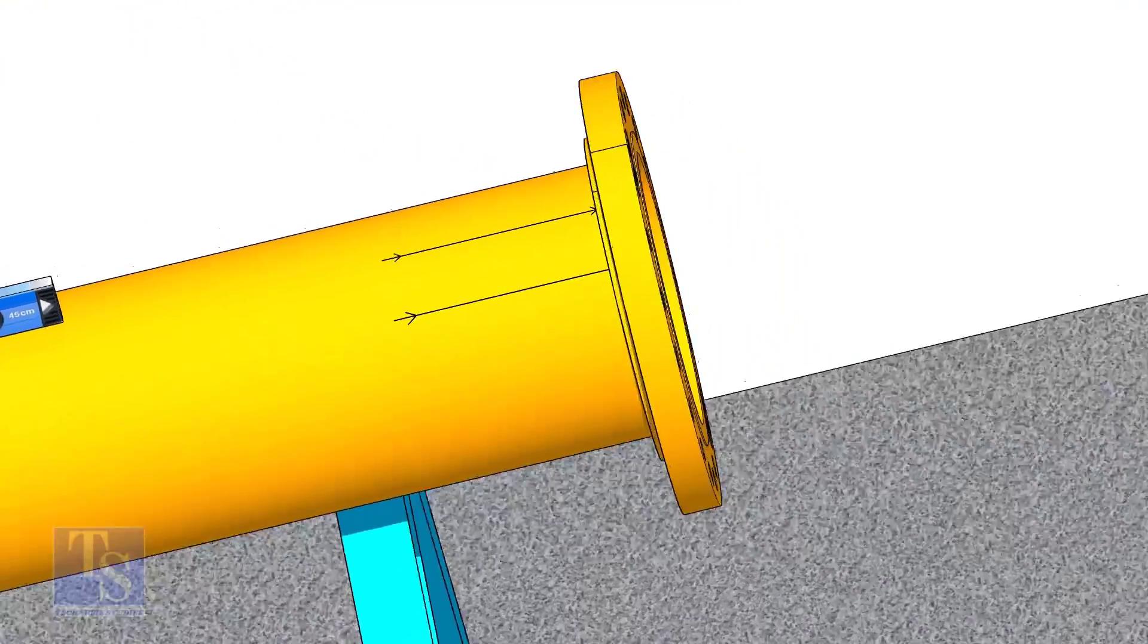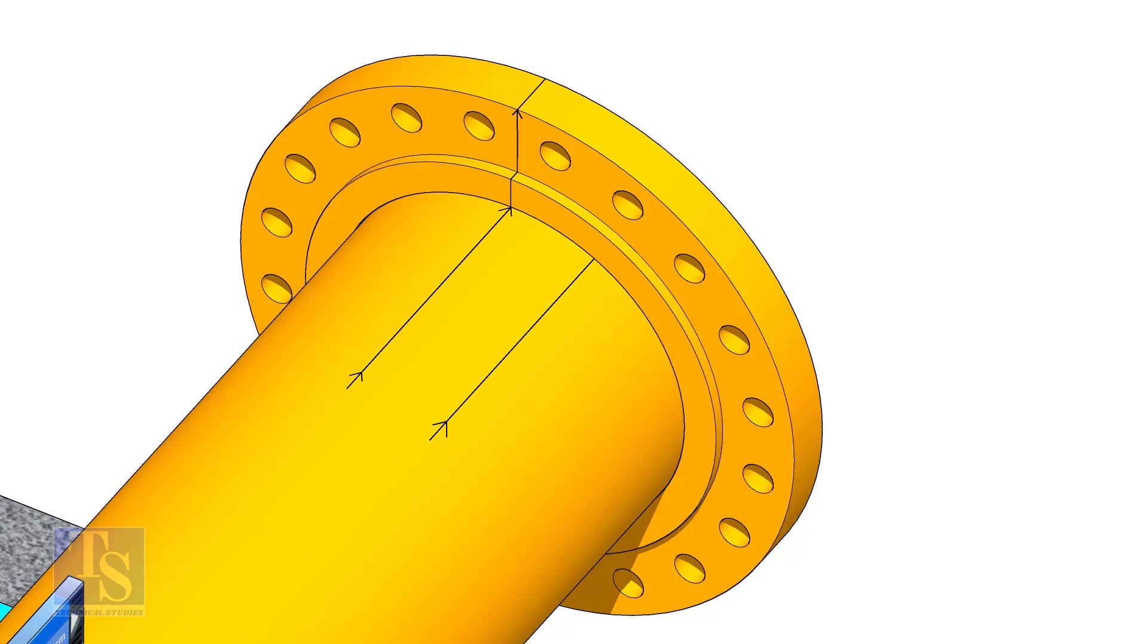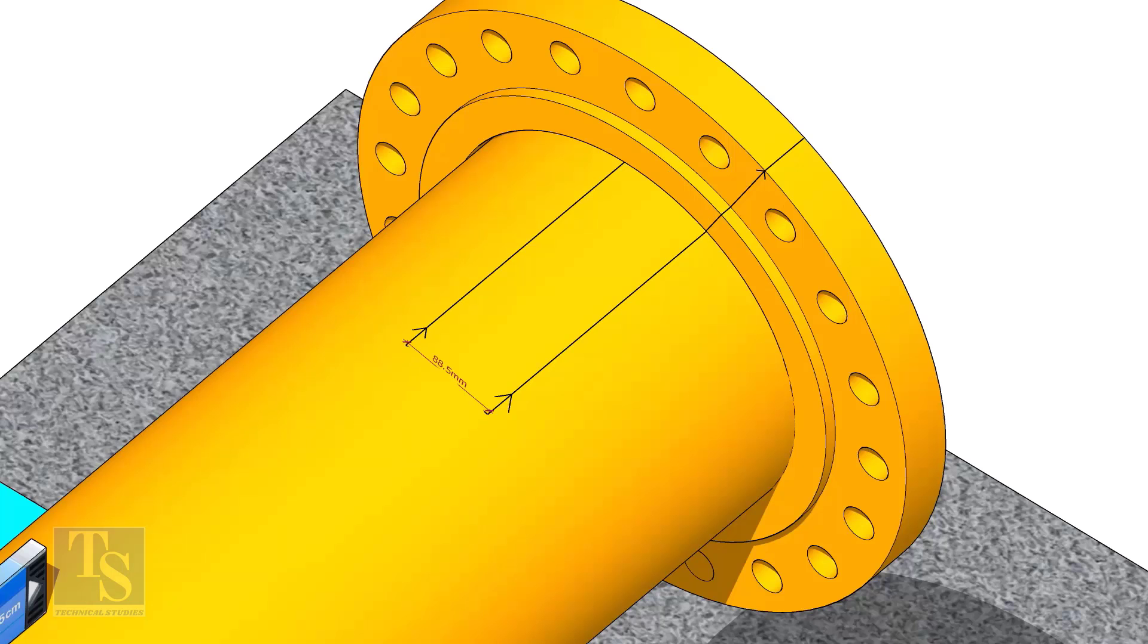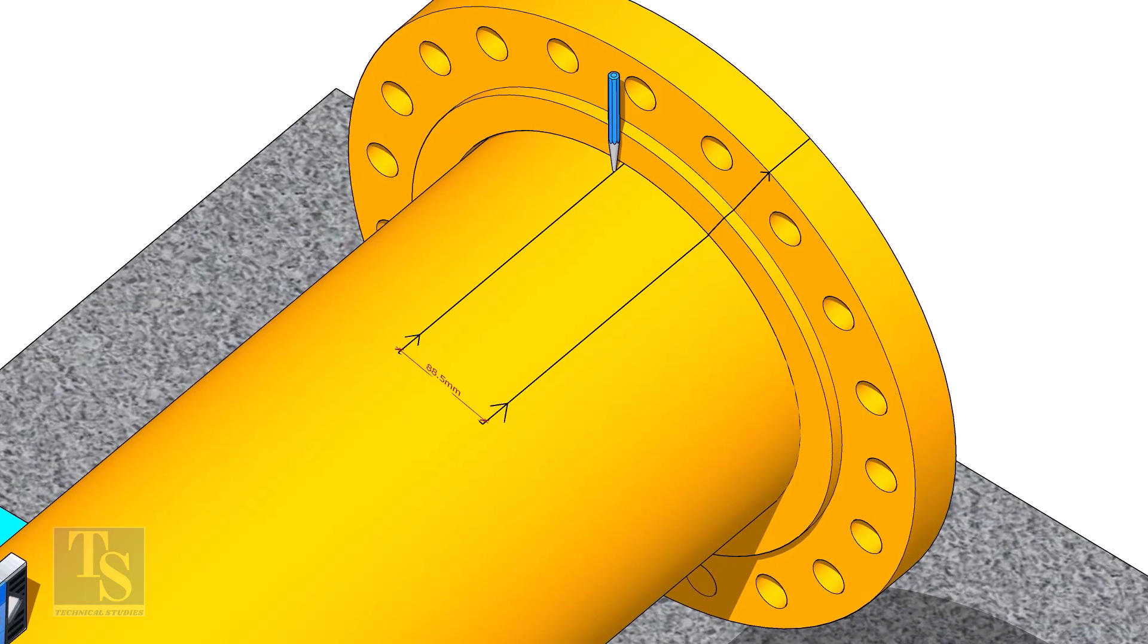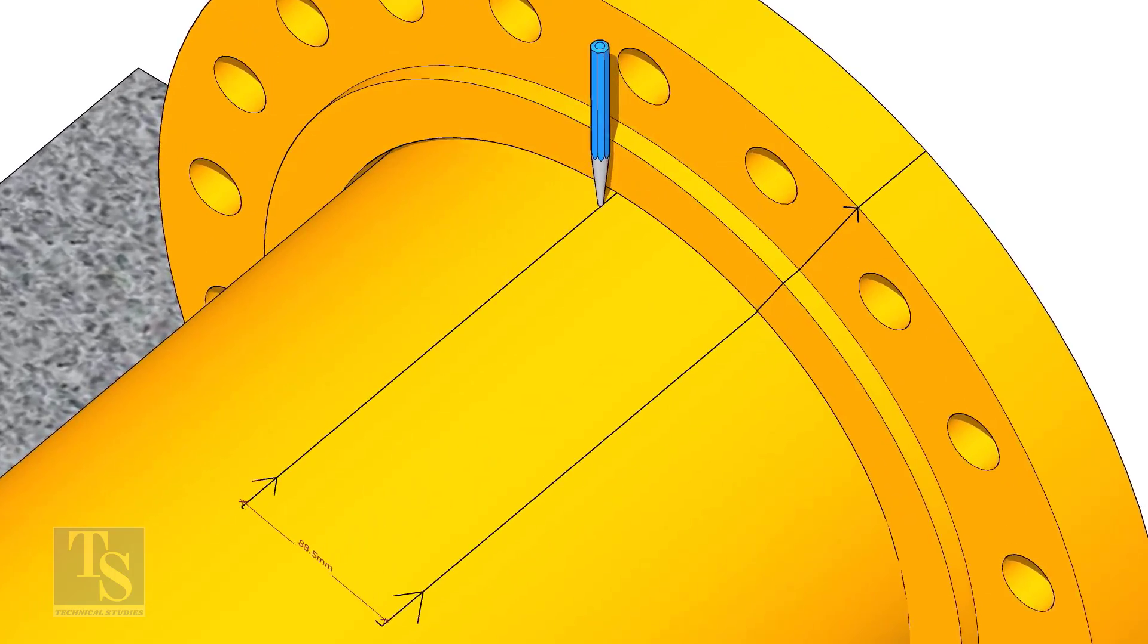Put the flange on the pipe. Rotate the flange until the center line on the flange and the 25 degree line on the pipe comes in a line. Don't forget to punch mark the center lines.